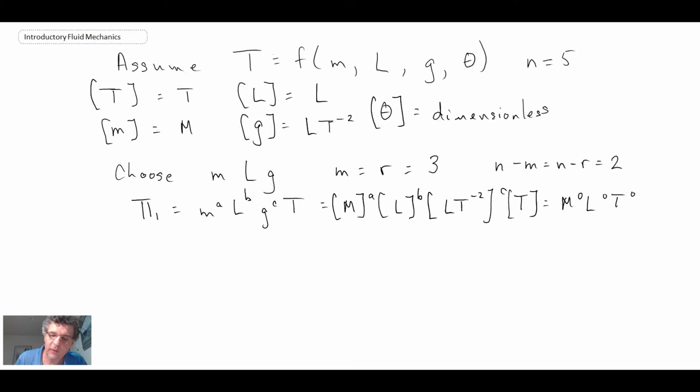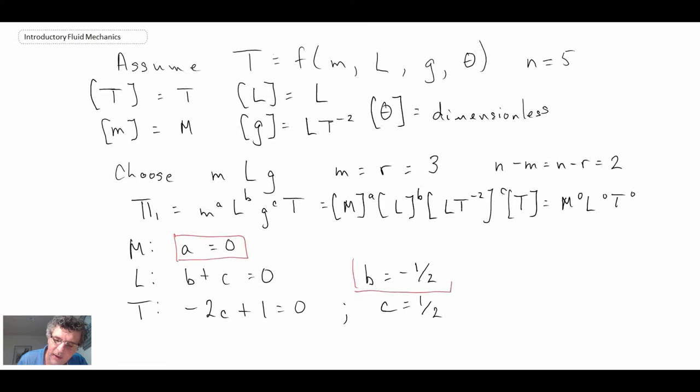So going through, starting with our mass term, we find A is equal to 0. Looking at dimension of length, B plus C is equal to 0. And we have to move on to time in order to find C. So we get C is 1 half. And then we can go back up and determine B to be minus 1 half.